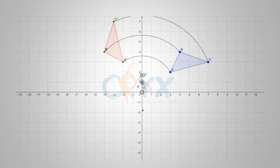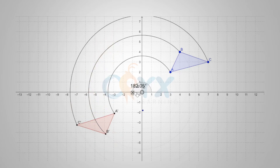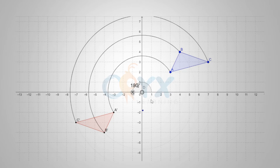Rotating the figure further, I can rotate it all the way to 180 degrees. The rule for 180 degrees counterclockwise is the point (x,y) becomes the point (-x,-y), negating both of the values. So the original point A at (3,2), negating both x and y, gives me A prime at (-3,-2). I can do the same for point B and C, where (4,4) becomes (-4,-4), and the point C (7,3) becomes (-7,-3) for C prime.